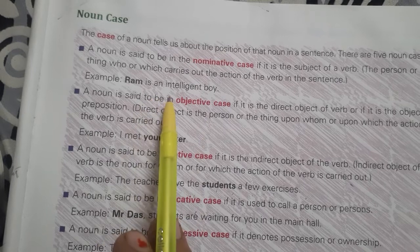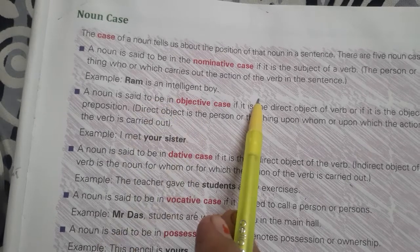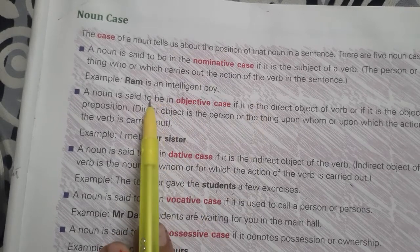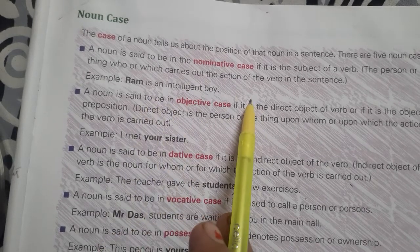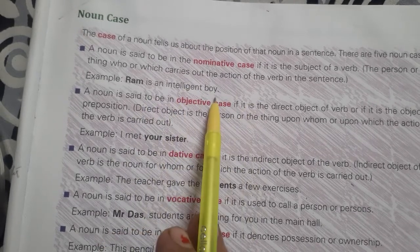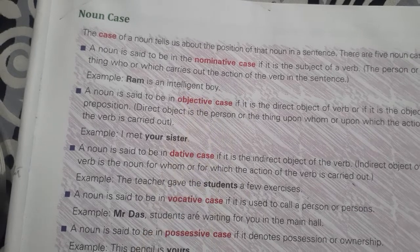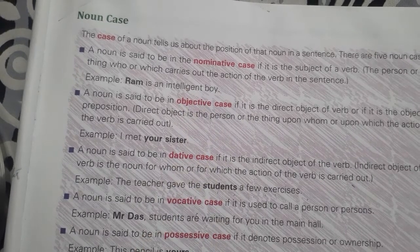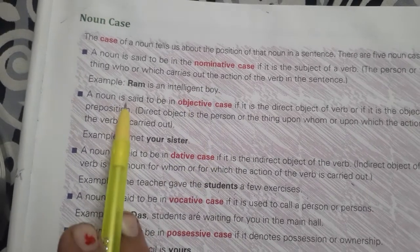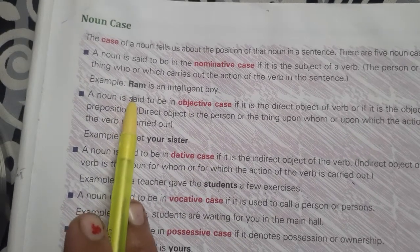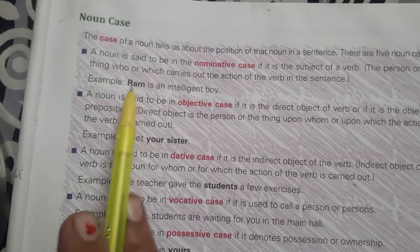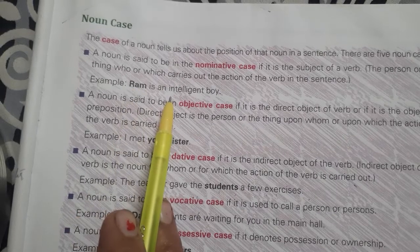In a sentence such as 'Ram is an intelligent boy,' Ram is in the nominative case, because Ram is the subject carrying out the action of the verb.